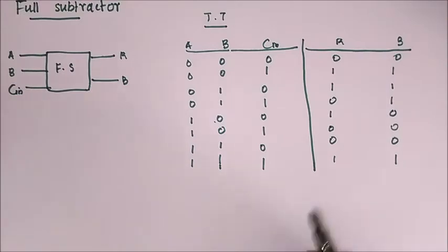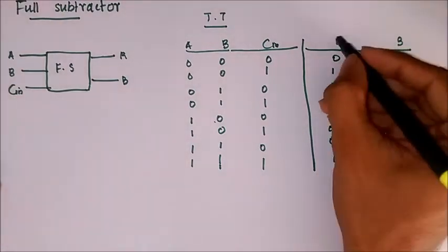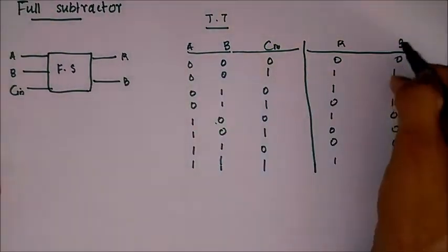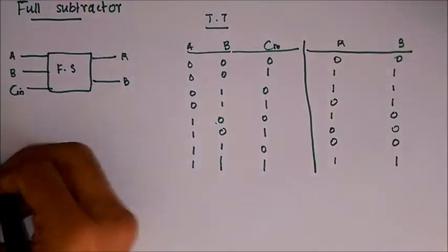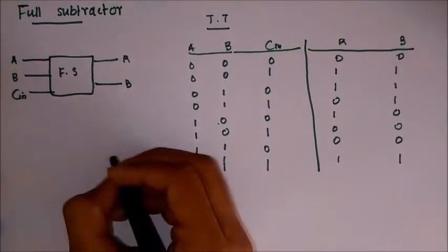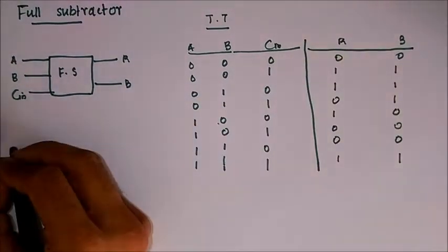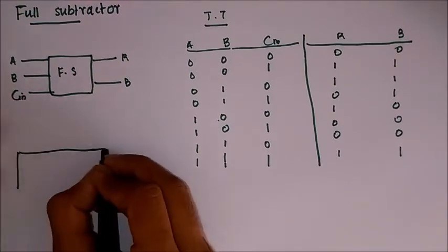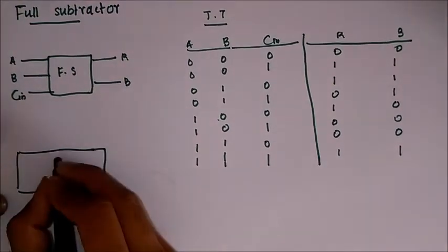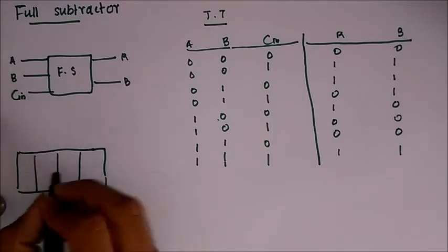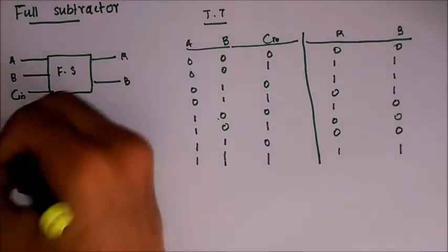Now let's obtain the difference and borrow relations of the input. So for both result and borrow we have to create K-maps, draw K-maps. As there are eight inputs we need an eight cell K-map.